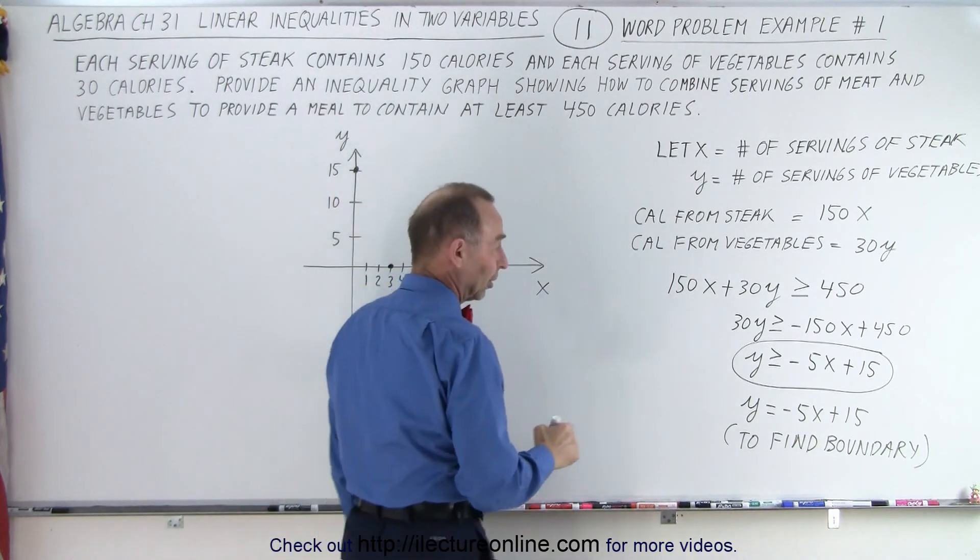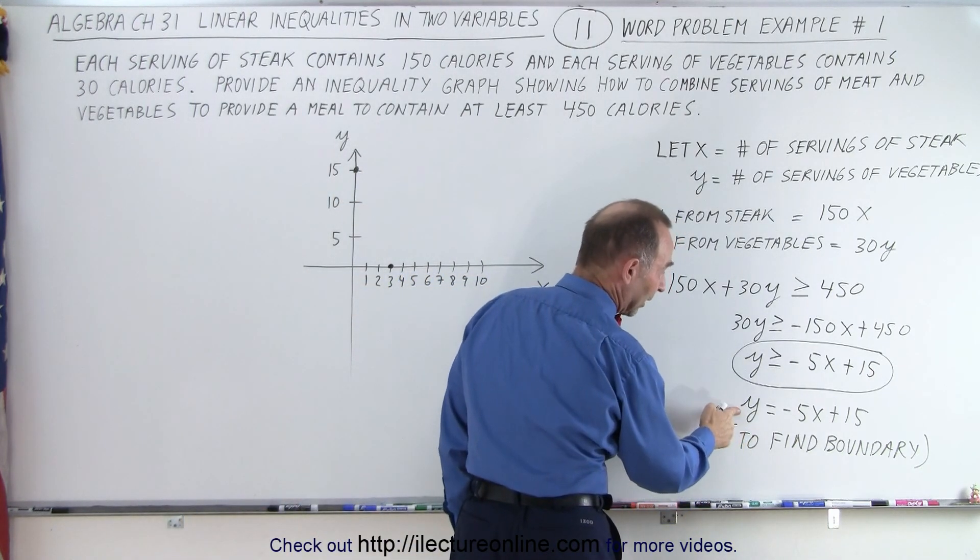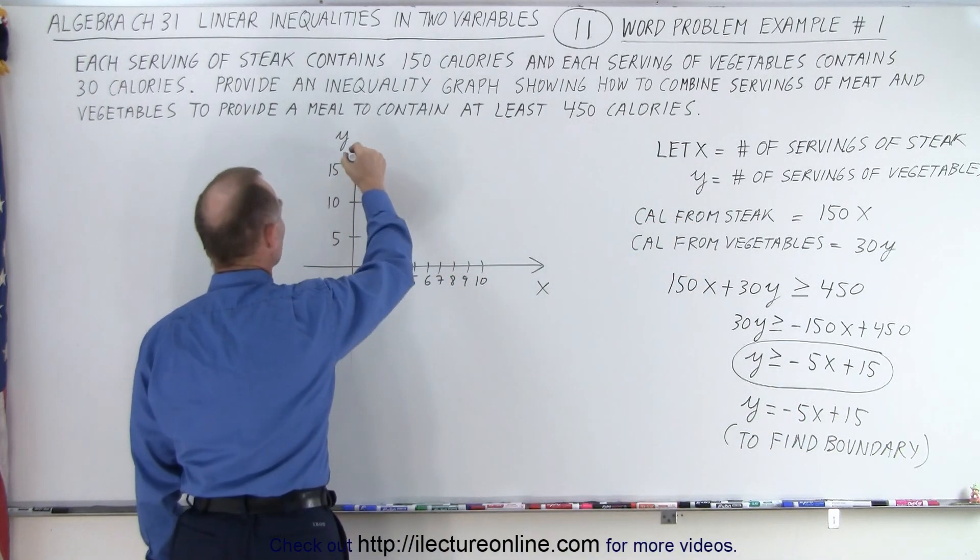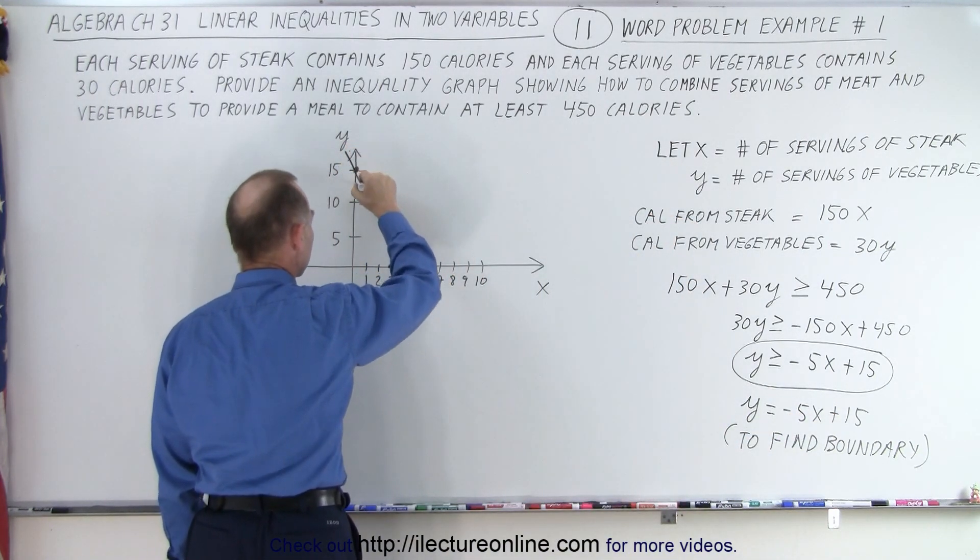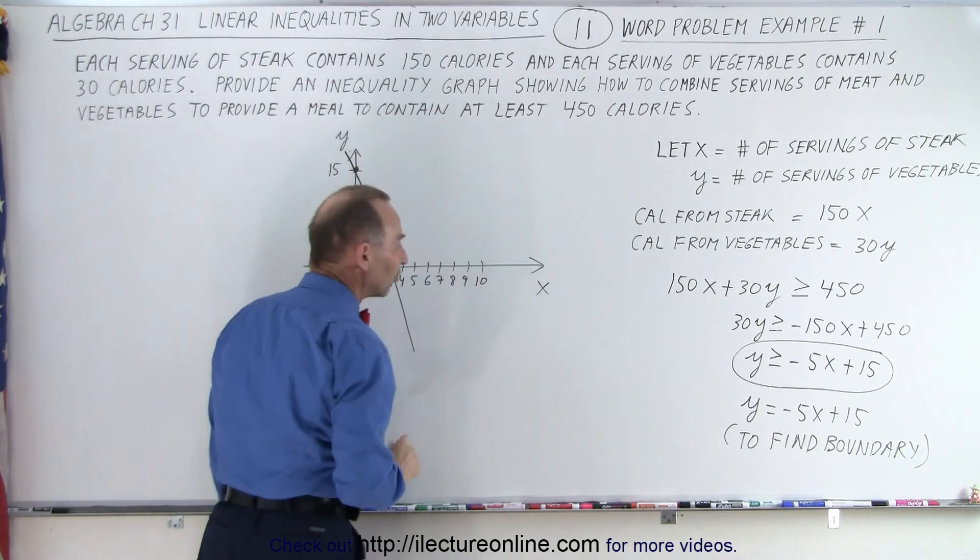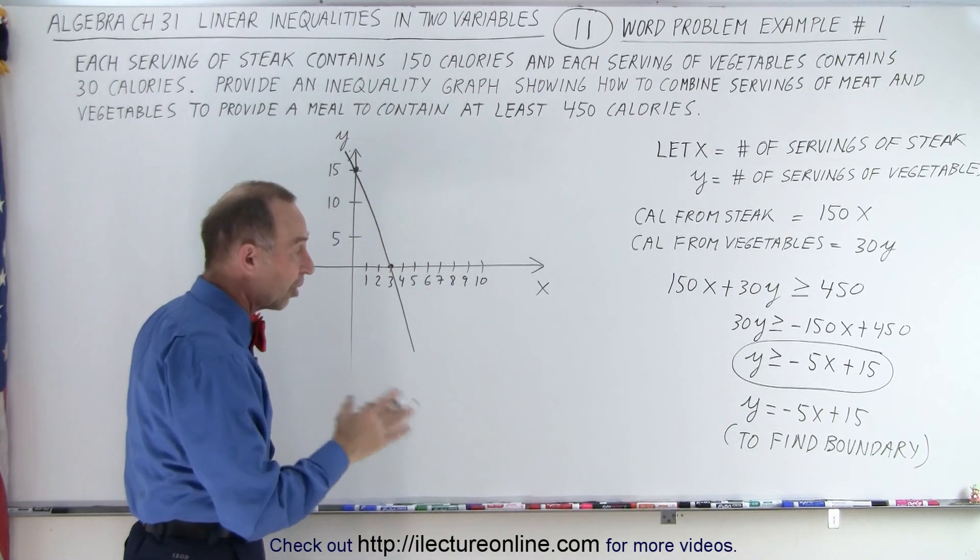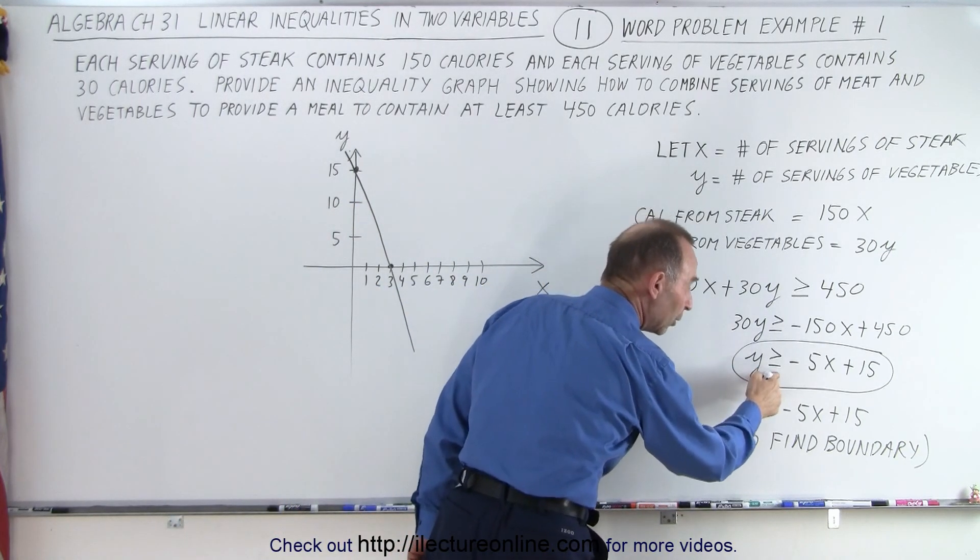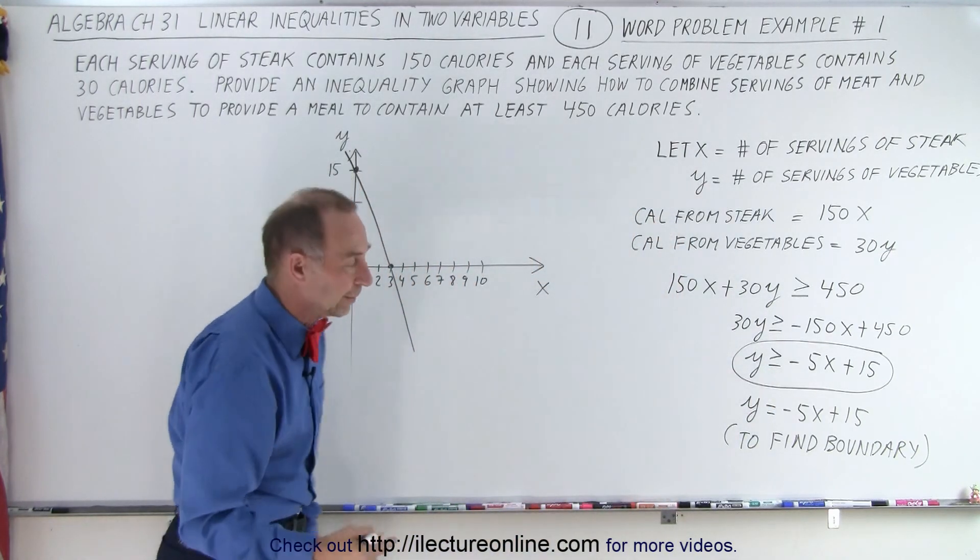Another way to find the x, the place where it crosses the x-axis, let y equal 0 and then x will be equal to 3. Now we draw a solid line. Why a solid line? A solid line because it includes the boundary as well. It can be equal to 450 or greater than.